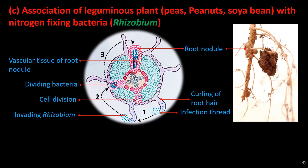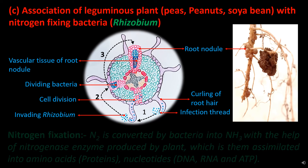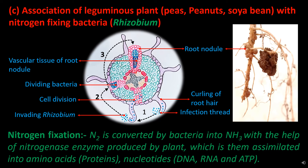In these nodules, nitrogen is fixed by bacteria. In the process of nitrogen fixation, nitrogen is converted by bacteria into ammonia with the help of nitrogenase enzyme produced by the plant, which is then assimilated into amino acids — the building blocks of various proteins — and into nucleotides, which are the building blocks of DNA, RNA and ATP. In this association, bacteria get shelter and organic acid in return. After the plant dies, nodules rupture and bacteria become free to infect new hosts. Surplus nitrogen is utilized by neighboring plants.